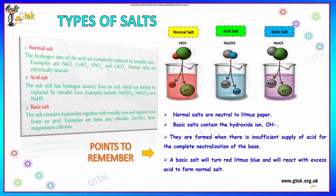Normal salt: the hydrogen ions of the acids are completely replaced by metallic ions, and that is referred to as normal salt. Whereas acid salt still has hydrogen atoms from an acid which can be further replaced by metallic ions. That's your acid salt.